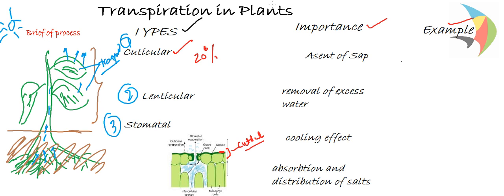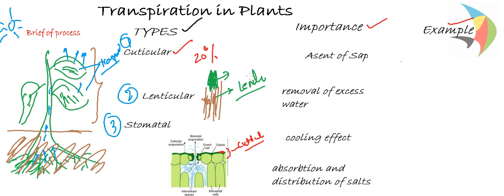The second type is lenticular transpiration. Lenticular transpiration takes place from the pores on the surface of the stem — it can be pores on the surface of the stem or the green part of the stem, such as a green shoot. The transpiration which takes place from the lenticels is called lenticular transpiration, and this amounts for approximately 1 to 5% of the total transpiration loss in the plant.